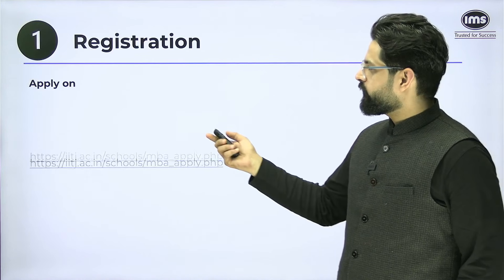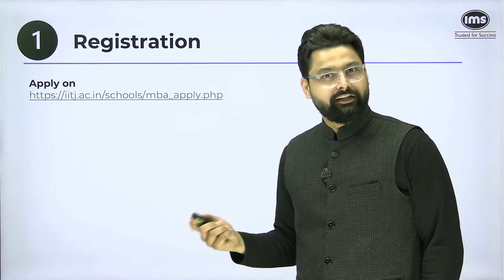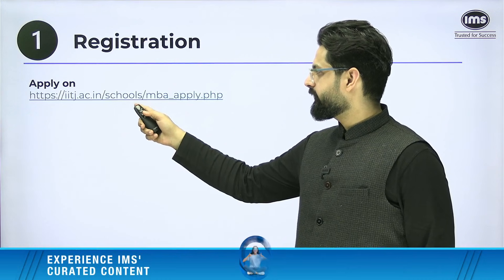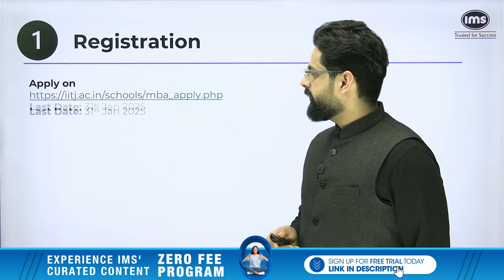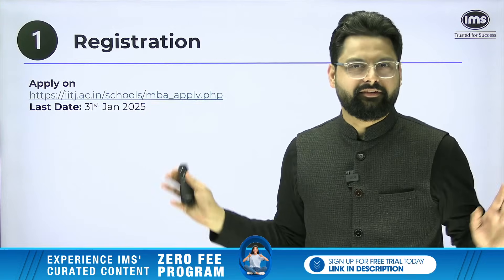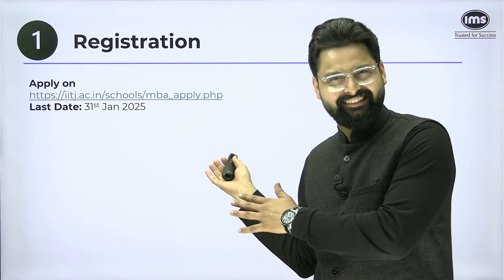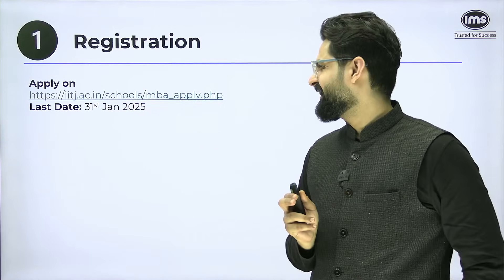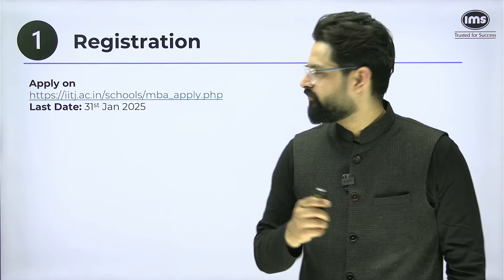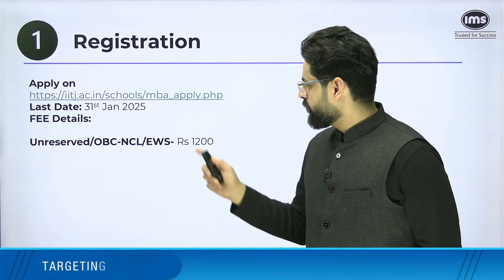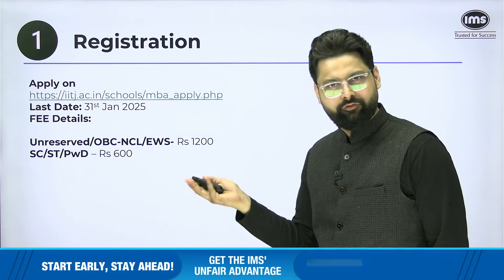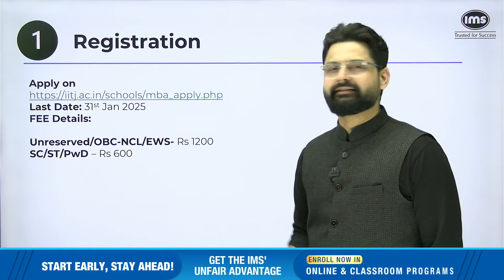For registration, you will have to apply on the IIT Jodhpur website at iitj.ac.in/schools. The last date is 31st January — in fact, for all the recent IITs being discussed, the last date is 31st January. So if you meet the eligibility criteria, be quick and fill it. The application fee is 1,200 rupees for General, OBC, and EWS candidates, and half of that for SC, ST, and PWD candidates.